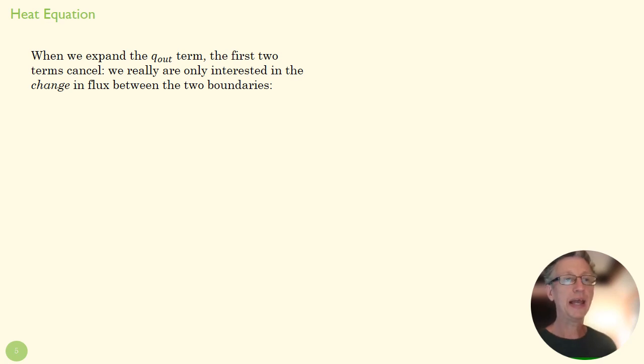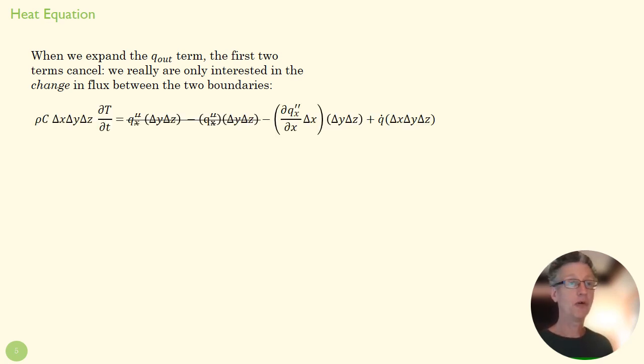So when we expand that q_out term, or just multiply it out what we had before, we find this equation. In other words, here's our multiplied part out: this term plus this, here, these two are identical, right, plus this minus that—great, we get to knock those out.